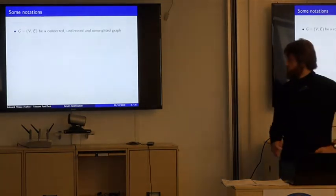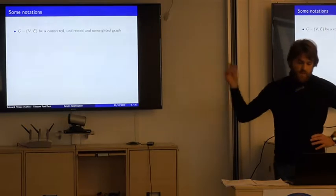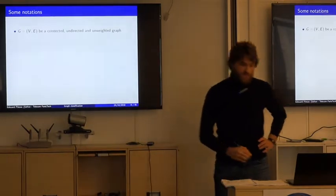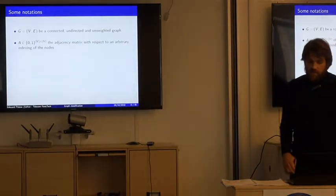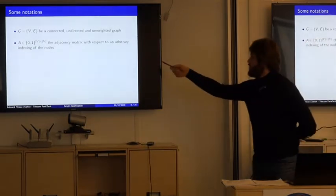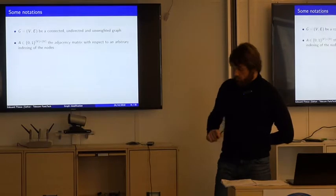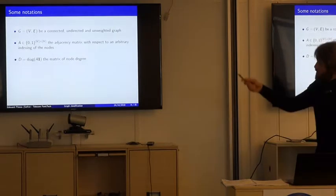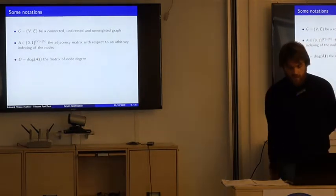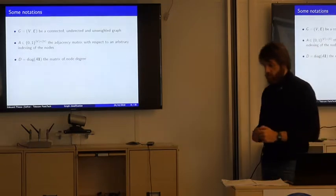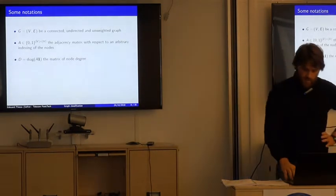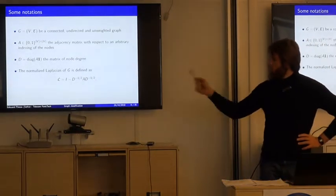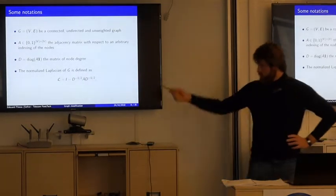Some notations for the rest of the talk. G is a connected, directed, and unweighted graph with a set of vertices V and a set of edges E. We have the adjacency binary matrix with respect to an arbitrary indexing of the nodes — important because permutations arise when indexing changes. We have the degree matrix giving the number of connections for each node, and we can define the normalized Laplacian of G from the adjacency and degree matrices.